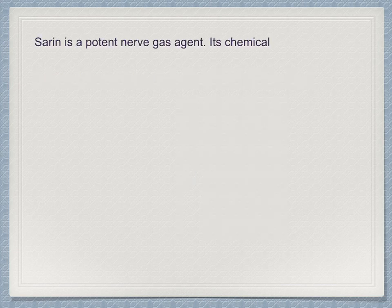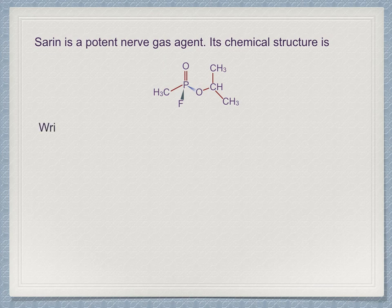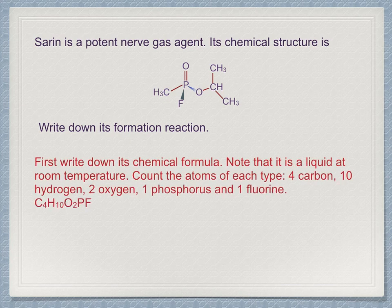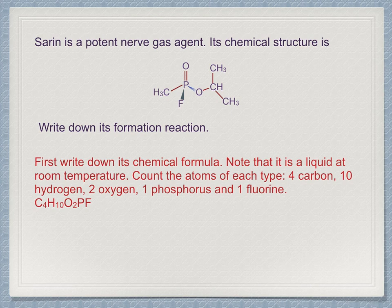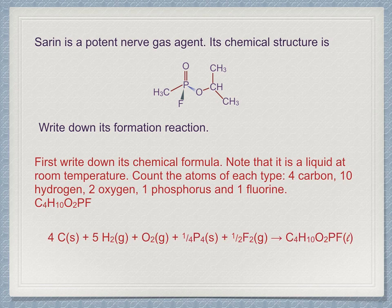Here is another example. Sarin is a potent nerve gas, and here is its chemical structure. Write down the formation reaction for this substance. First, write down its chemical formula by counting the number of each atom — you should conclude that its formula is C4H10O2PF. Then, using the reference states at 298.15 Kelvin for each element, write it out with the correct stoichiometric coefficients and don't forget the phase. You should be able to write: 4 C solid + 5 H2 gas + O2 gas + 1/4 P4 solid + 1/2 F2 gas → C4H10O2PF liquid.